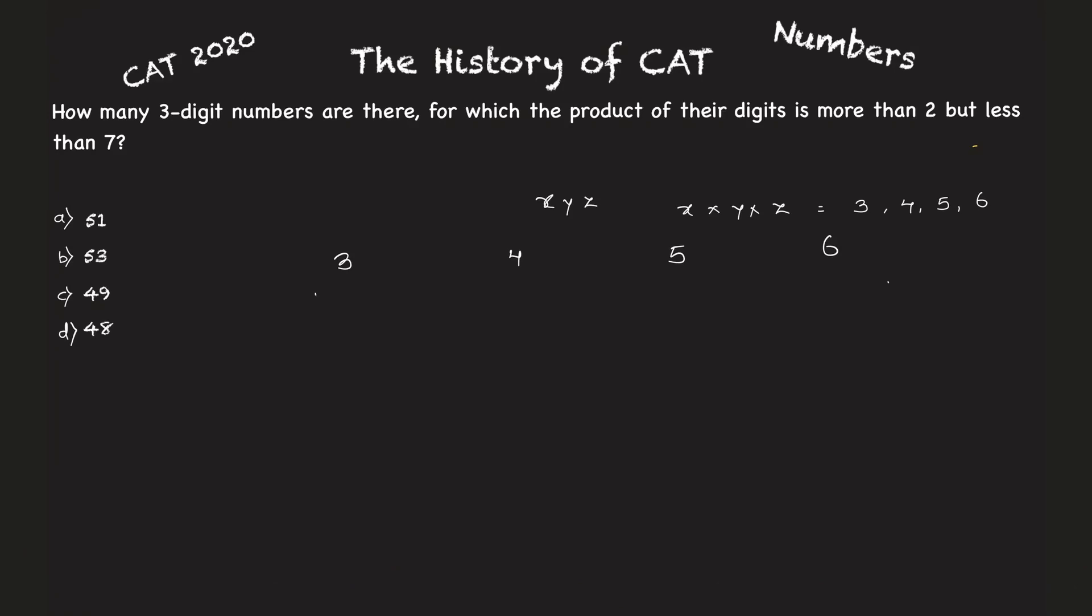With product as three, what could be the numbers? It could be one one three, or three one one, or one three one. So I can get three numbers here with the product as three. Similarly for four, I can get one one four, four one one, and one four one. Three numbers here as well where the product is four.